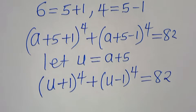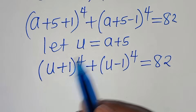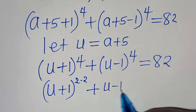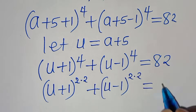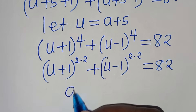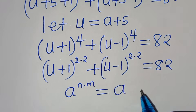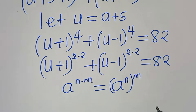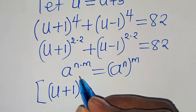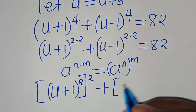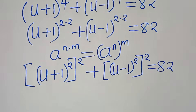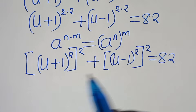We can express (u + 1) to the power of 4 as (u + 1)² raised to the power of 2, and similarly (u − 1) to the power of 4 as (u − 1)² raised to the power of 2. This uses the rule aⁿᵐ = (aⁿ)ᵐ. So we have [(u + 1)²]² plus [(u − 1)²]² equal to 82.